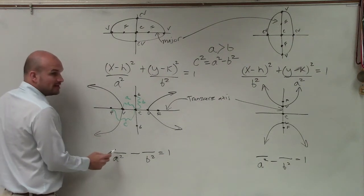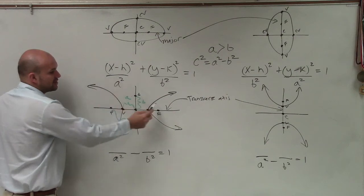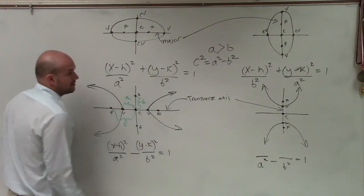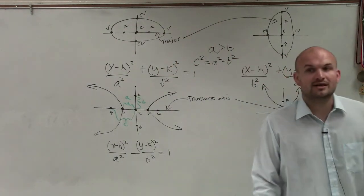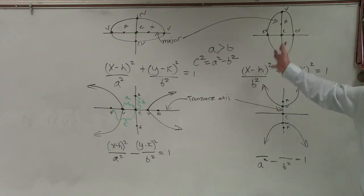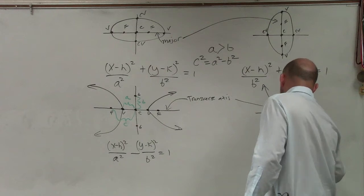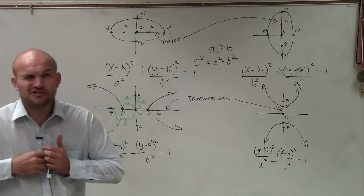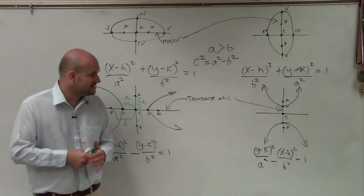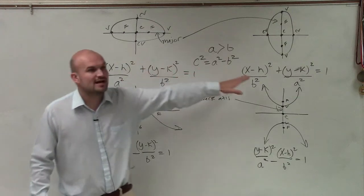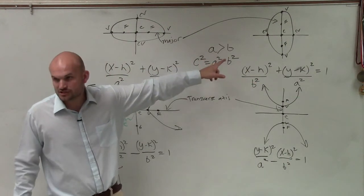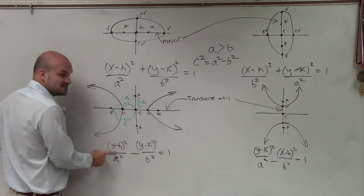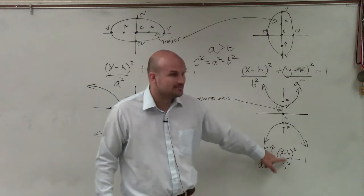Now, when your x coordinate of your center is over the a, just like an ellipse, you're going to have a horizontal hyperbola — a horizontal transverse axis. If my x coordinate of my center is over the b, then it will be a vertical transverse axis. I wrote down the ellipses so you guys can make the distinction. There's not a lot of differences, but the only thing changing between horizontal and vertical for ellipses is where a is. For hyperbolas, the only difference is the x and y coordinates — when your x is over the a, it's horizontal; when your x is over the b, it's vertical.